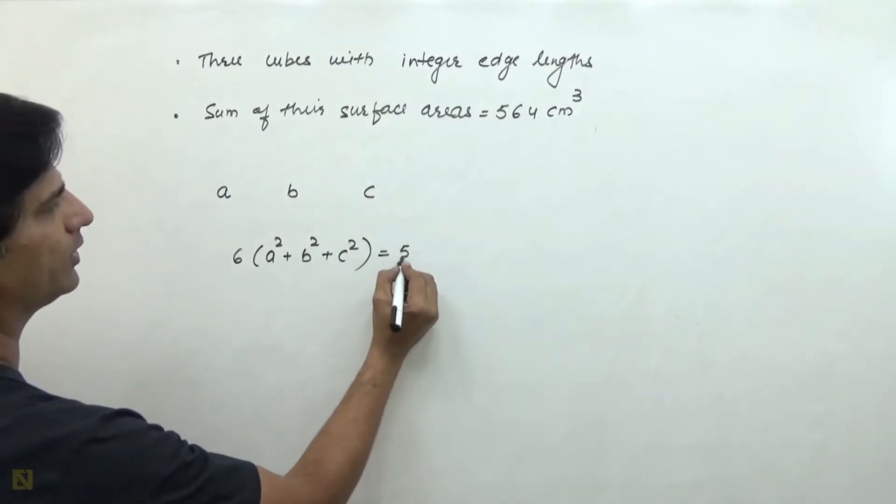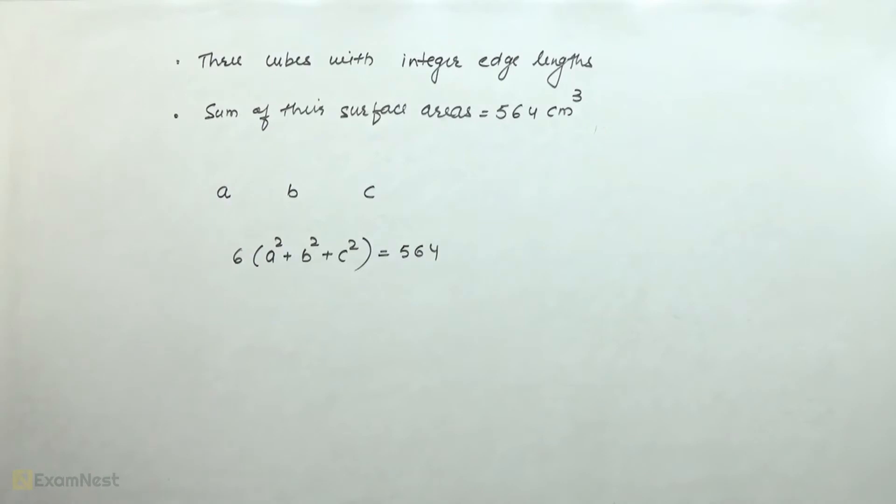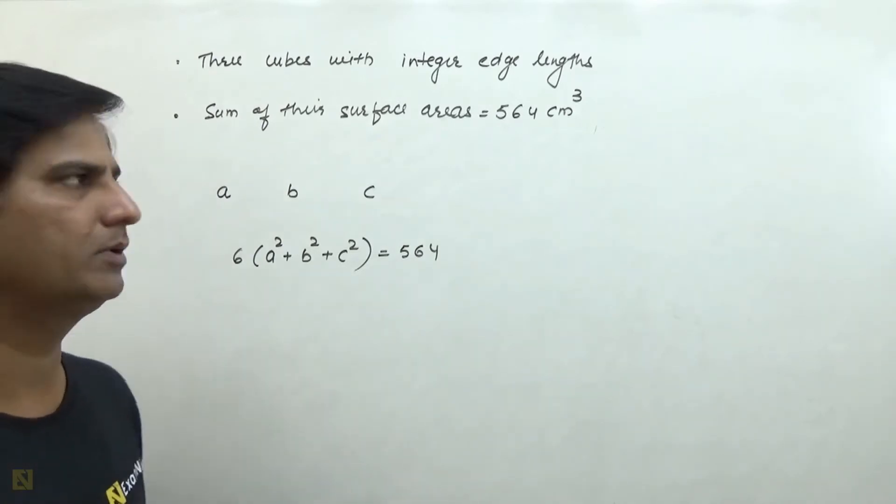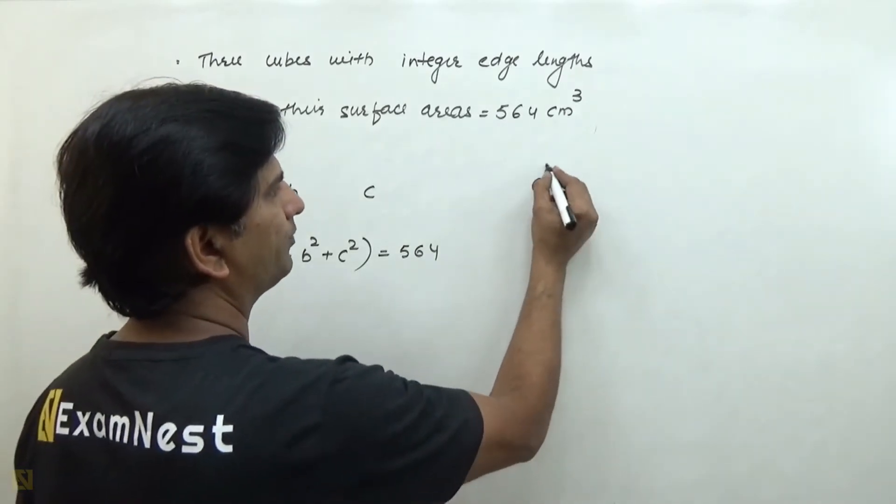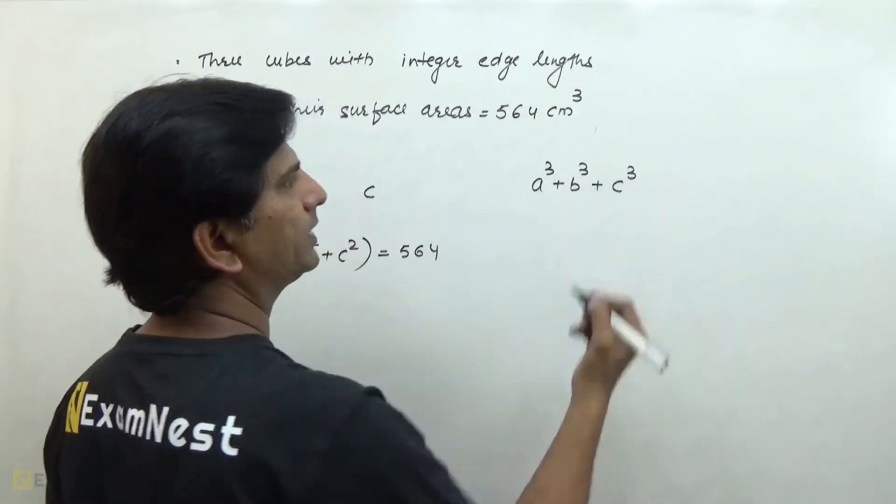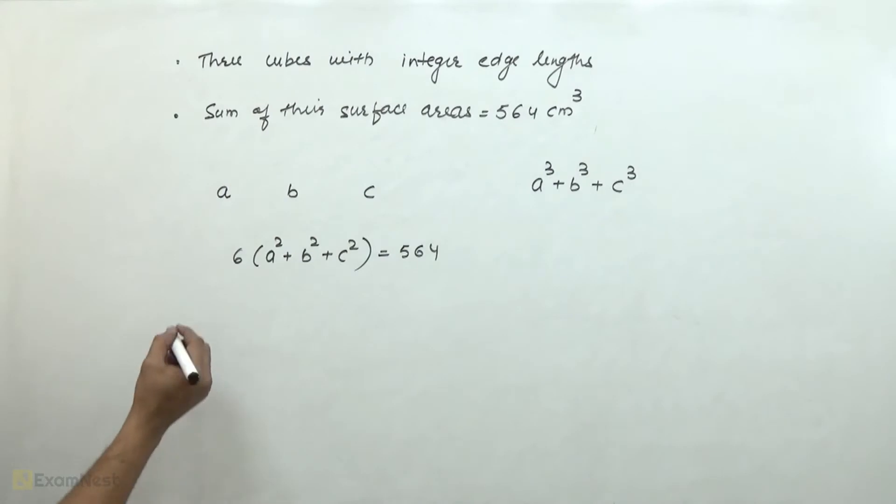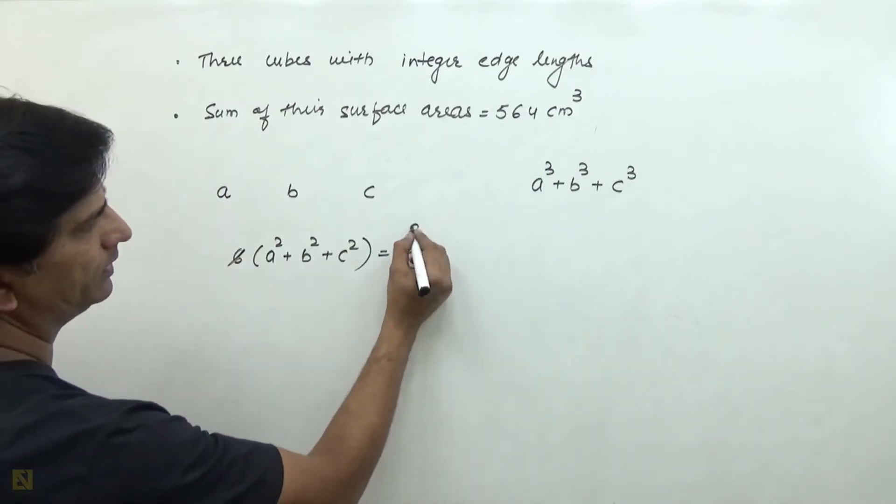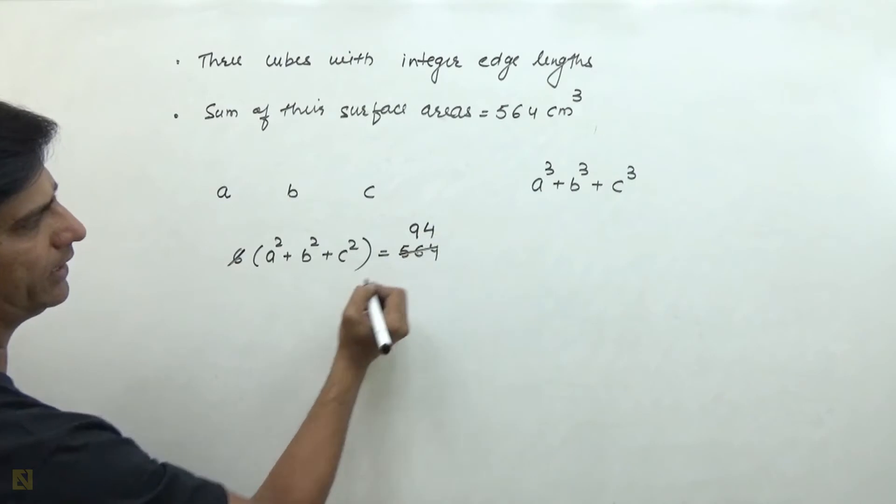This is equal to 564. If we have to find the possible values of the volume, the volume will be A³ + B³ + C³. If we solve this, 6 goes into 564 nine times, giving 94.